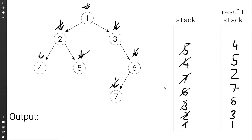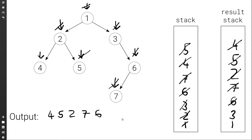Once we've populated the result stack, the last step is to actually pop the values and visit them — in this case, we're just going to print them. We begin with four, print it, pop it; print five, pop it; print two, pop it; print seven, pop it; six, three, and one. So the final output is four, five, two, seven, six, three, one — which indeed is the post-order traversal of this simple tree.